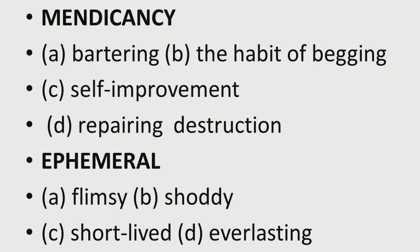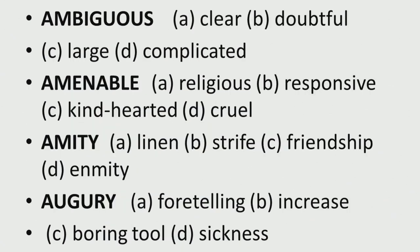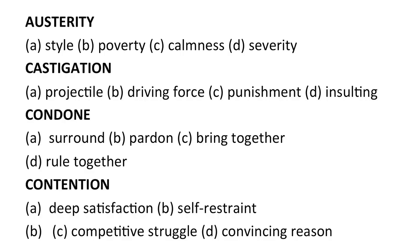'Ephemeral' — these are words that appear very frequently in all competitive kinds of exams. Choices: flimsy, shoddy, short-lived, everlasting. 'Ambiguous' — choices: clear, doubtful, large, complicated. 'Amenable' — choices: religious, responsive, kind-hearted, cruel. 'Amity' — choices: linen, strife, friendship, enmity. 'Augury' — choices: foretelling, increase, boring tool, or sickness. 'Austerity' — choices: style, poverty, calmness, severity. 'Castigation' — choices: projectile, driving force, punishment, insulting. 'Condone' — choices: surround, pardon, bring together, rule together.